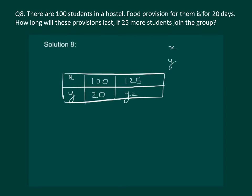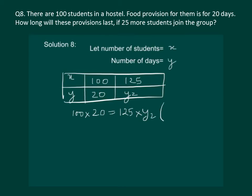Now, let us use the property of inverse proportion that x1 into y1 should be equal to x2 into y2. So, we get 100 into 20 is equal to 125 into y2 using the property x1 into y1 should be equal to x2 into y2.